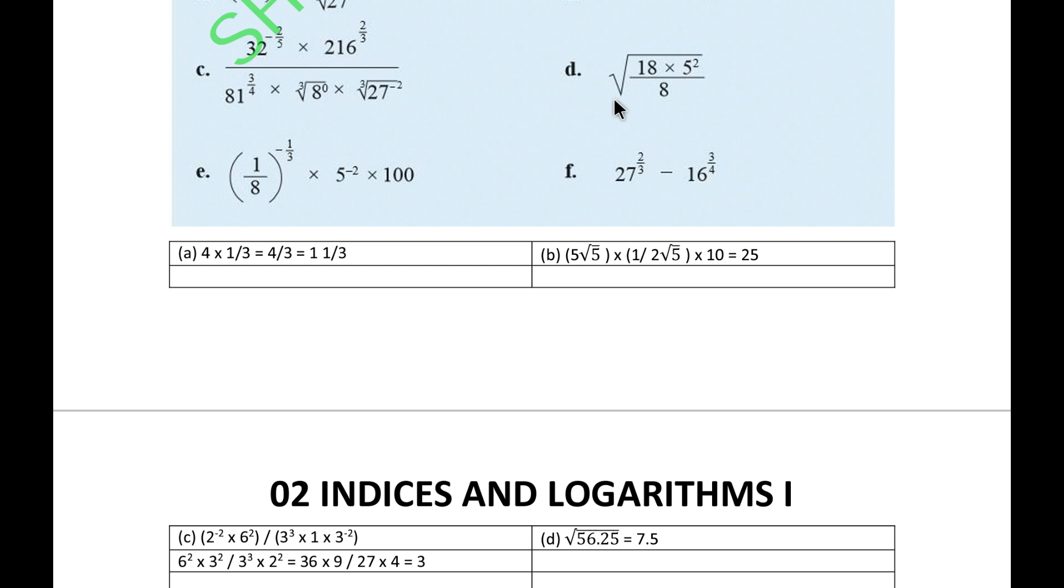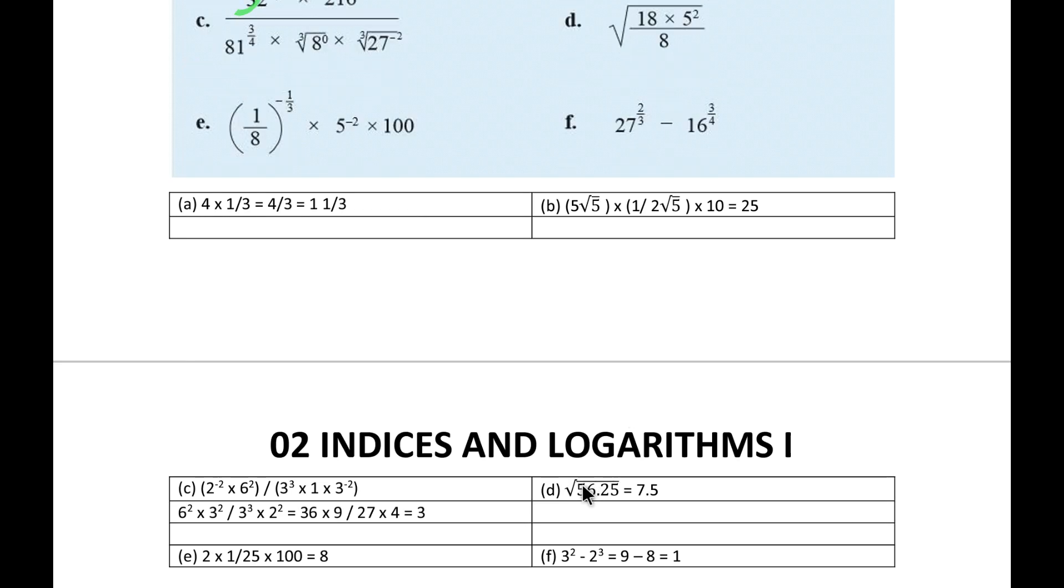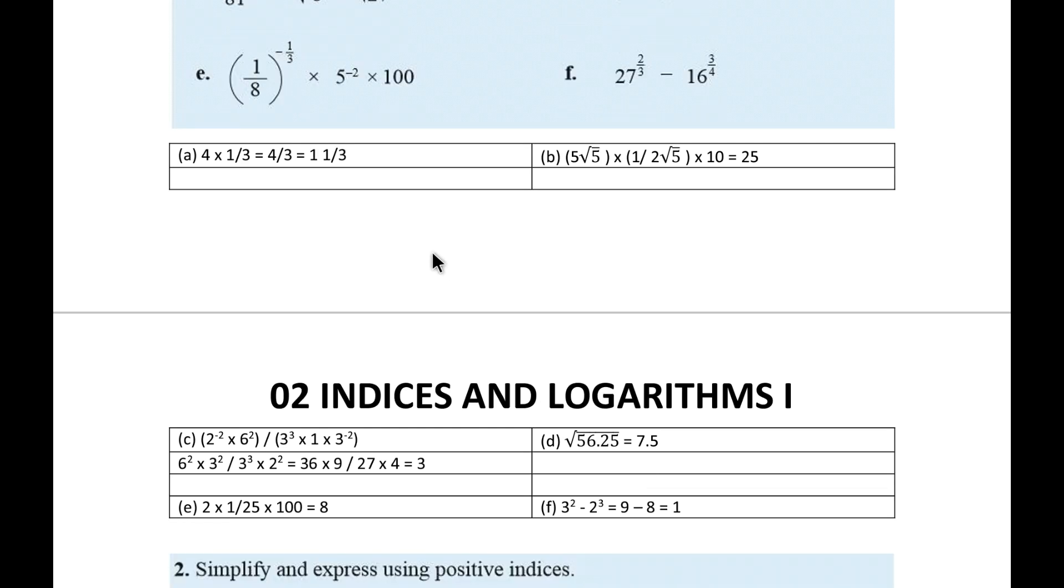Next one, D. Here 18 into 25 divide by 8. That value is 56.25. Using the long division method or approximation method, you can calculate the answer as 7.5. The E part, it's 1 over 8. That's 1 to the power 3 over 2 to the power 3 into 1 third, which is 1 over 2 to the power minus 1. So when it comes up, it becomes 2. Then 2 into 1 over 25 into 100, that could be 8.